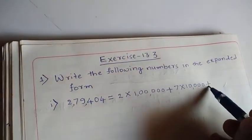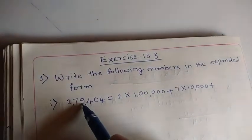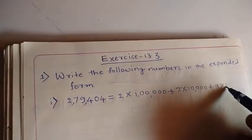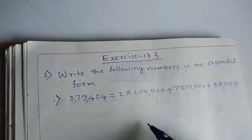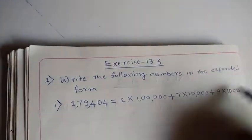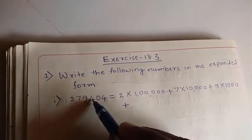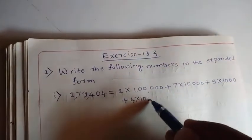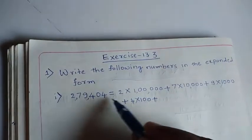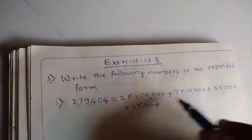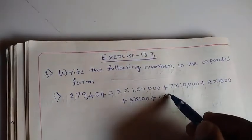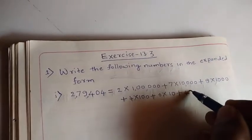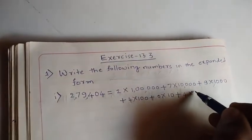Nine comes in which place? Thousand — so nine into thousand. Next, put the plus sign. Four comes in which place? Hundred. Plus zero comes in the tens place, so zero into ten. Plus four comes in the units place, and the value of the units place is one.